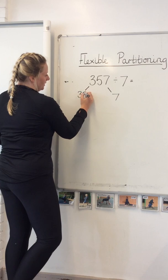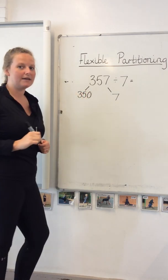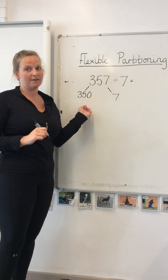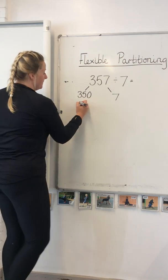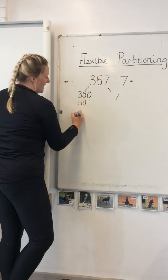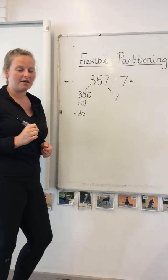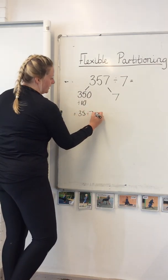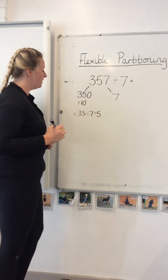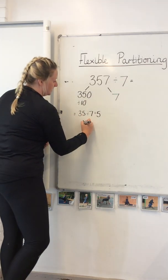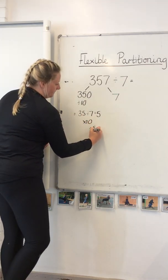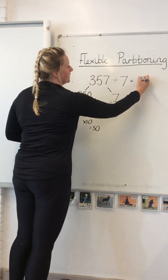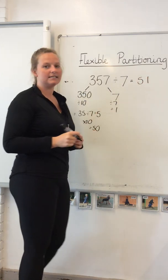And I'm now going to partition my 350. Now I don't expect you to be able to do 350 divided by 7. However, if we divide it by 10 and make it 35, that makes it a little bit easier. 35 divided by 7 equals 5, so times it by 10 again equals 50. Then 7 divided by 7 is 1. So our answer is 51.